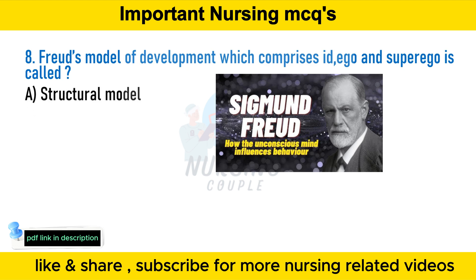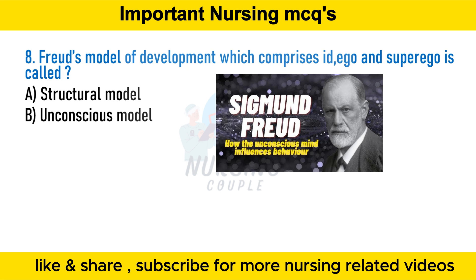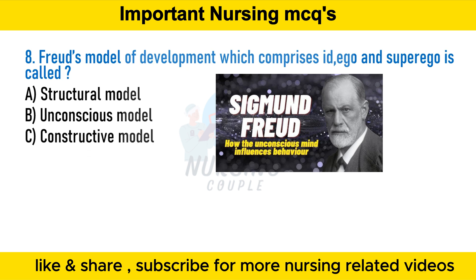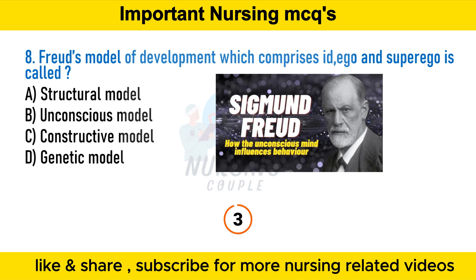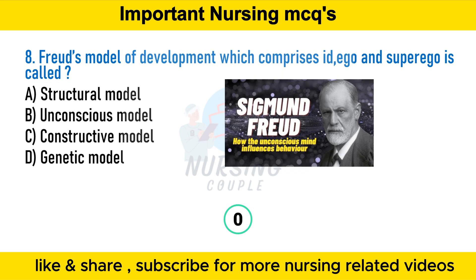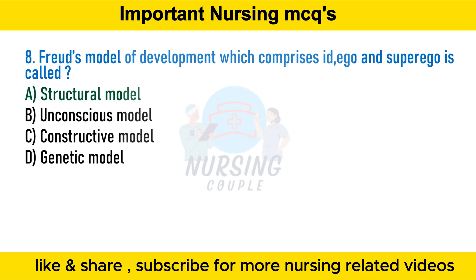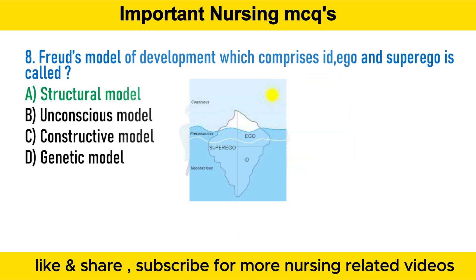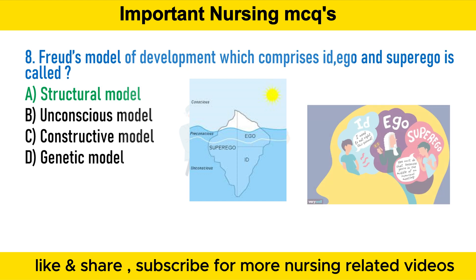Sigmund Freud's model of development which comprises id, ego, and superego is called: option A structural model, option B unconscious model, option C constructive model, option D genetic model. The answer is option A structural model.